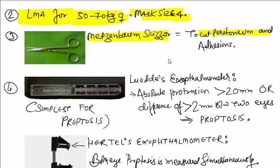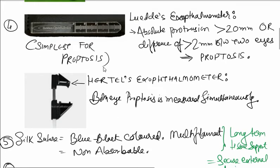Next instrument is the Lucie's exophthalmometer. This is the simplest for proptosis. Absolute protrusion is defined as more than 20 mm.